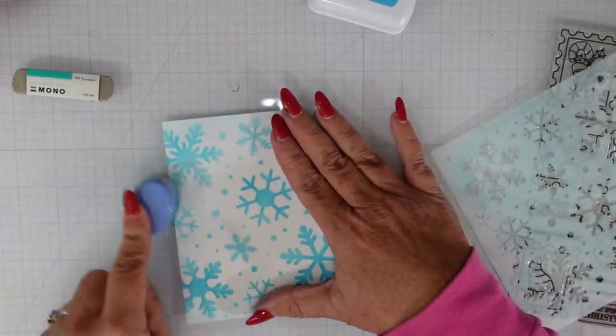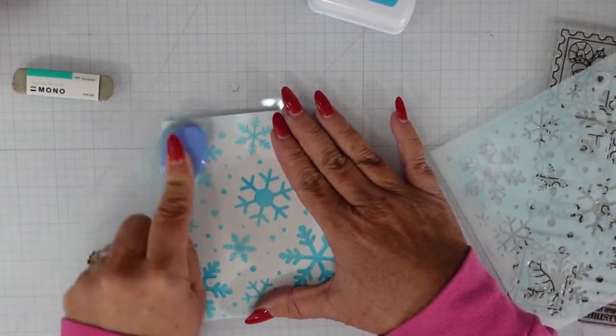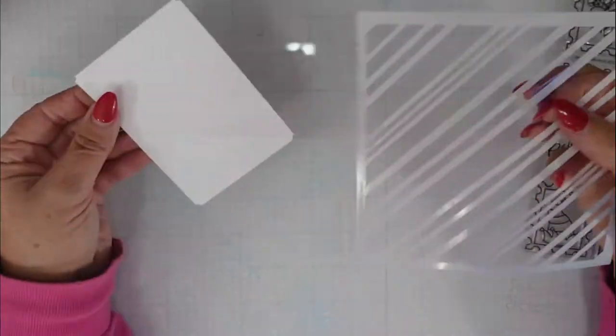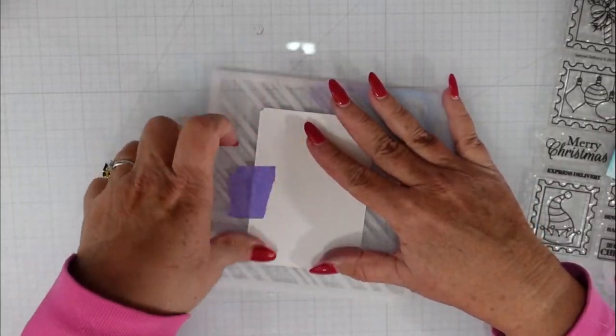I'm going to use the ink that's left on my brush and go all around the edges of this four and a quarter by five and a half inch card panel. And we're going to move on to some more stenciling.